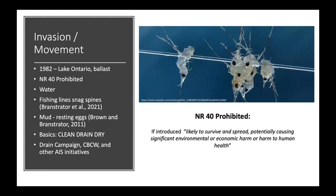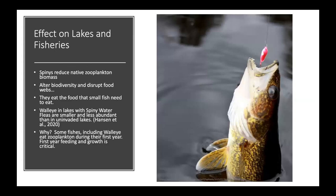The basic ways to prevent spiny water fleas are just our normal AIS basics — clean, drain, and dry. Think about Wisconsin statewide initiatives like the Drain Campaign, Clean Boats Clean Waters, and all the other statewide programs. These are all great for helping to prevent spiny water flea spread.